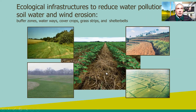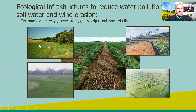In particular, ecological infrastructure was acknowledged as being very important to reduce water pollution and soil, water and wind erosion, through the implementation of special infrastructure like buffer zones, waterways, cover crops, grass strips, and shelter belts.